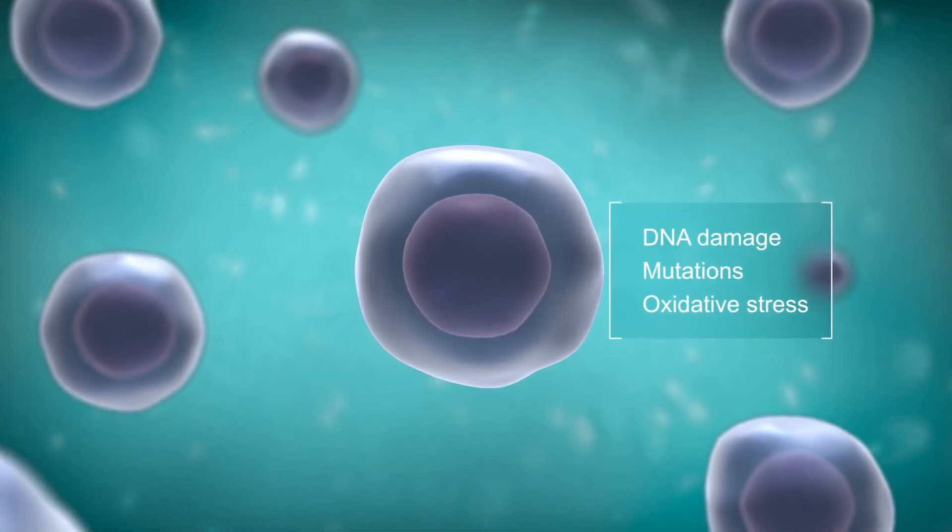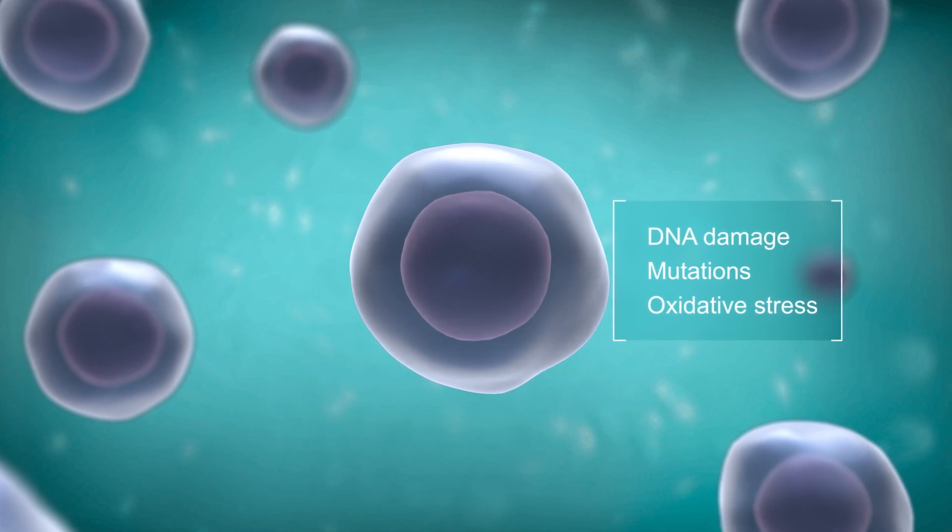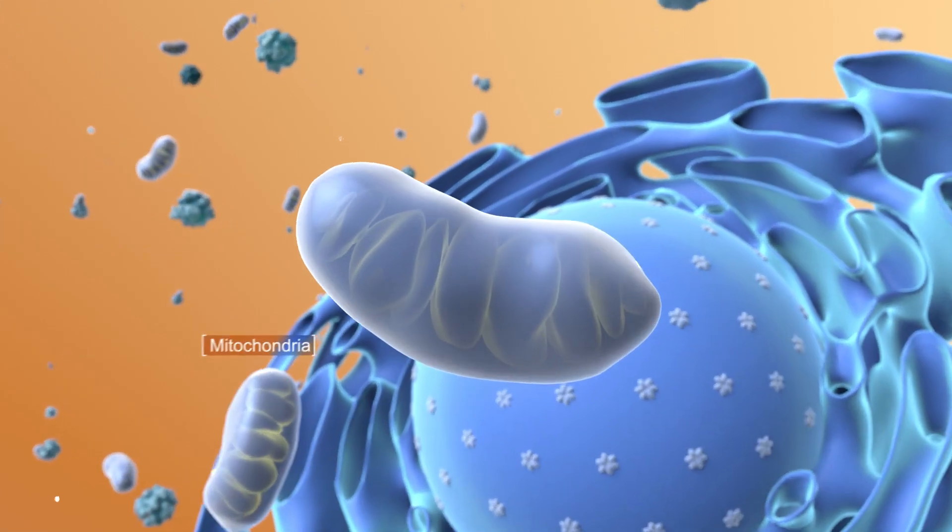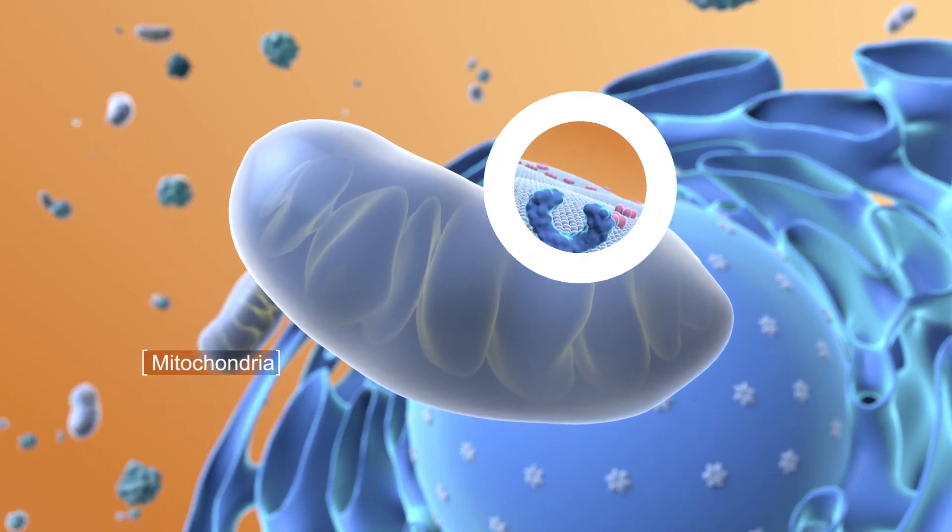Apoptosis is a form of programmed cell death critical to physiologic homeostasis, eliminating unwanted or dangerous cells. This process may be initiated through extrinsic or intrinsic pathways.